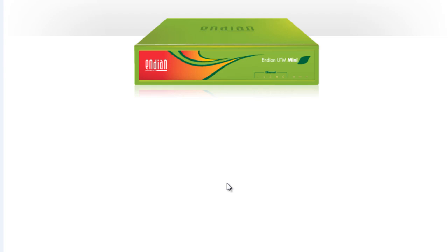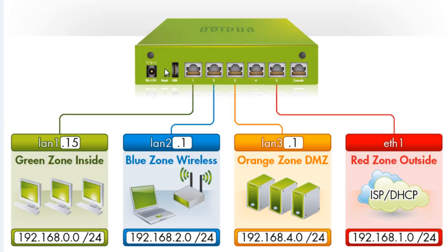Let's go over what we're going to attempt to do in the initial configuration. I have a diagram here showing the front and back of the Endian Firewall device, which shows all of the switch ports. We're going to set up four different zones. We're going to set up a green zone — the secure side of our network — for our inside network users.